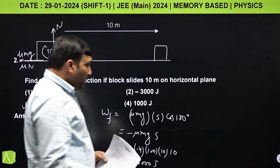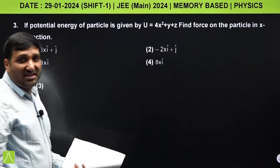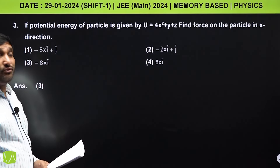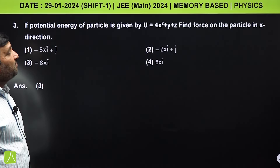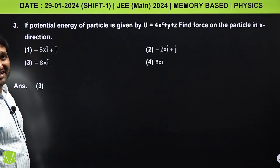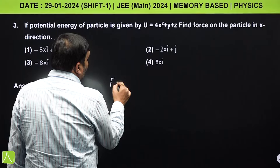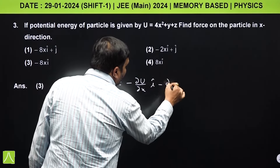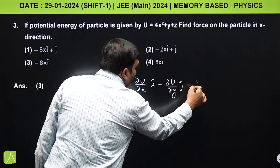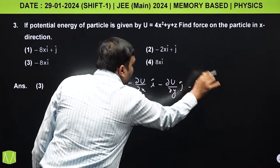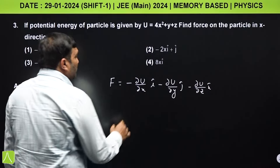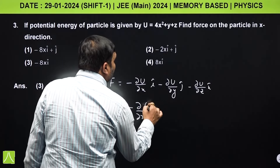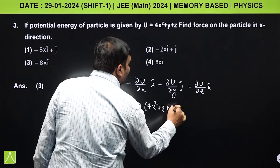Question 3 is a simple, fully formula-based question. If potential energy of a particle is given by U = 4x² + y + z, find the force in the x-direction. The force formula is: F = −(∂U/∂x)î − (∂U/∂y)ĵ − (∂U/∂z)k̂. Substituting U = 4x² + y + z into the formula for each component.